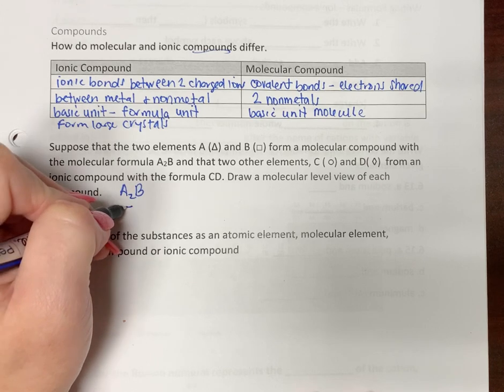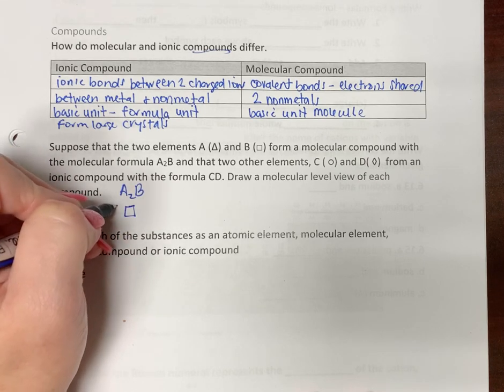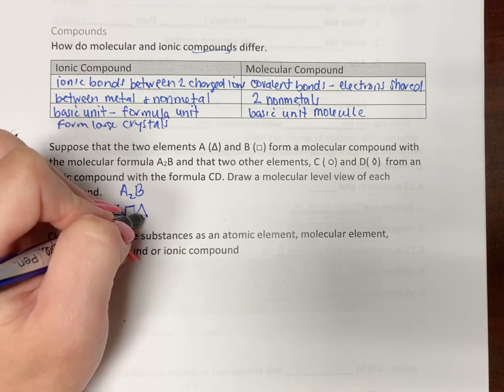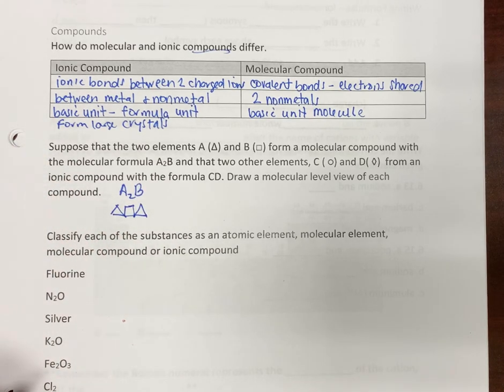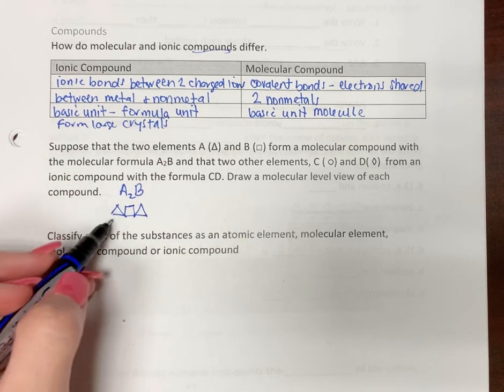A is the triangles, B is the square. I'm going to draw mine like this. Maybe that works, maybe it doesn't. But there's two A's, one B.